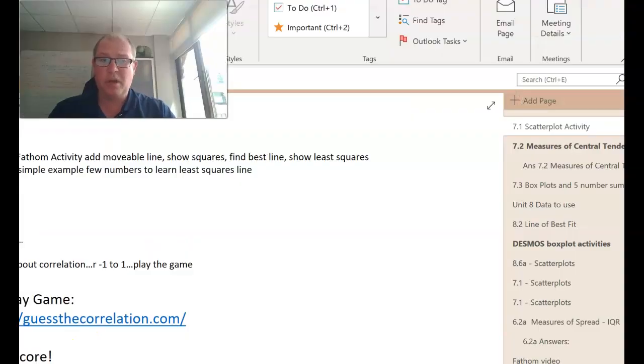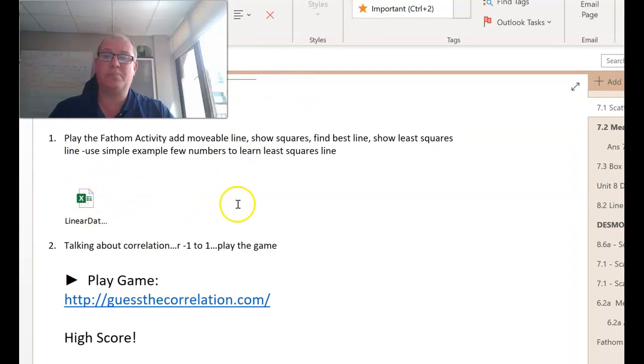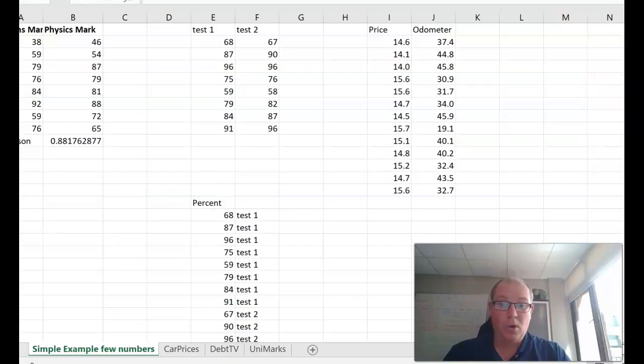You can pause the video because you want to go into Unit 7 and go to 7.1 scatterplot activity, and in there you will see an Excel spreadsheet. I'd like you to open that Excel spreadsheet so you can pause the video now, go to Unit 7.1 scatterplot activity and open the spreadsheet.